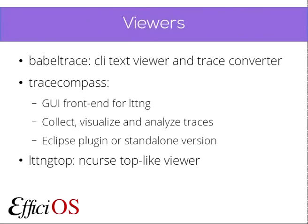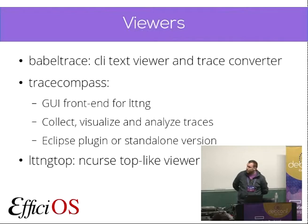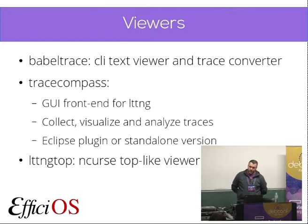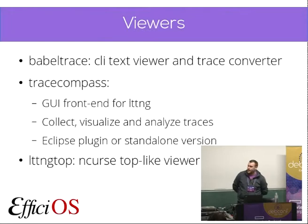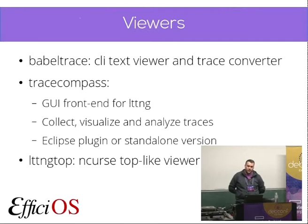There are two main viewers. The first one is babeltrace, which is the command line interface viewer that gives you a text log from your traces. Traces are created in a binary format optimized for size and speed of writing, so you cannot open the trace file with a text editor — babeltrace converts it to a human-readable text representation. It can also convert different trace formats, so it's possible to use babeltrace to import those traces as CTF traces and then correlate them with LTTNG traces.